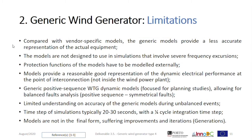Here are listed some of the main known limitations of the generic wind generator models. There are discussions about the appropriateness of generic models due to accuracy loss compared to vendor-specific equipment; however, this will depend on what is acceptable for the study being conducted. Further limitations are that the models are not designed for simulations involving severe frequency excursions, and protection functions must be modelled externally. The models provide a reasonably good representation of dynamic electrical performance at the point of wind connection, not inside the wind power plant. There is limited understanding of accuracy during unbalanced events, and the simulation time step is typically 20 to 30 milliseconds. Finally, models are not in their final form, undergoing improvements and iterations — or generations — as mentioned at the beginning.